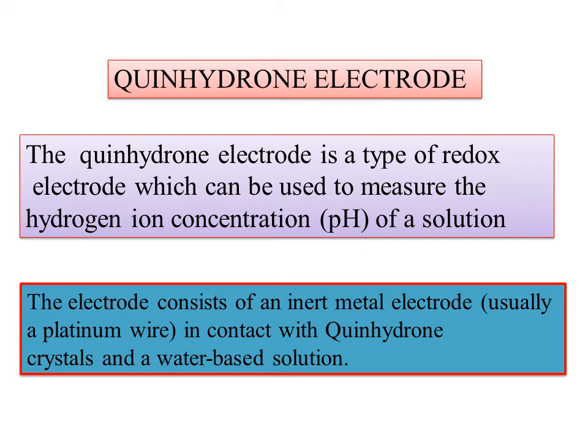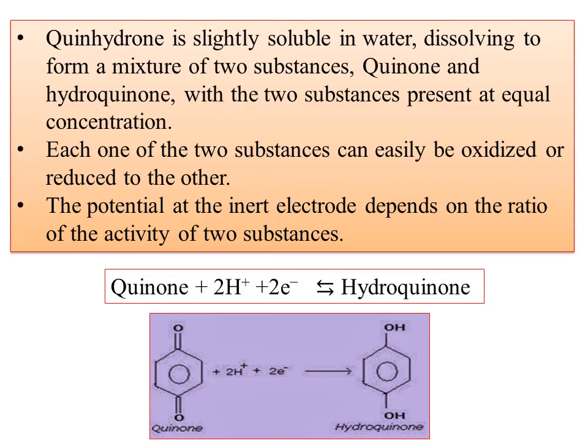The electrode consists of an inert metal electrode, usually a platinum wire, in contact with a quinhydrone crystal and a buffer solution. The quinone is slightly soluble in water, dissolving to form a mixture of two substances. The potential of the inert electrode depends on the ratio of the activity of the two substances. Quinone plus H⁺ plus electrons gives quinhydrone — this is the redox reaction, and it develops a redox potential.